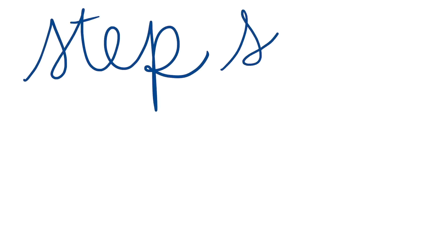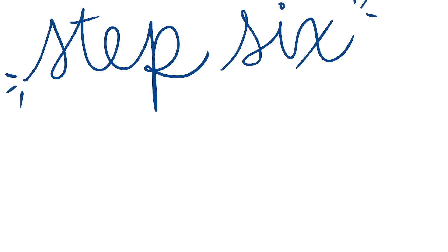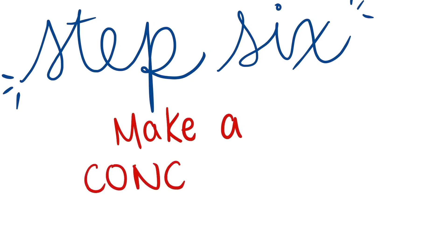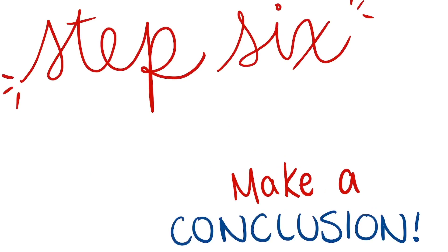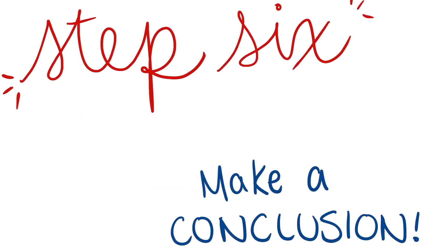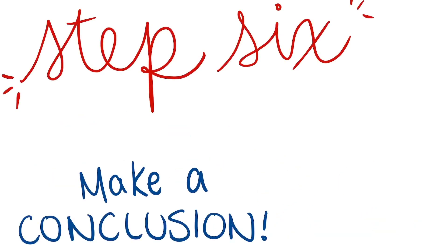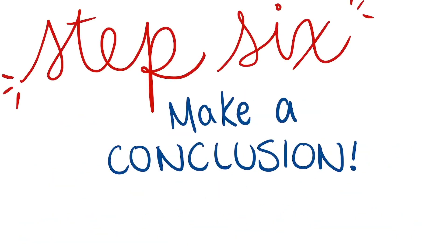After all of these things, we get to the last step of the scientific method, which is our conclusion. Our conclusion is the final statement that we make — a generalized statement about our hypothesis from our experiment results — so that we can share it with others.